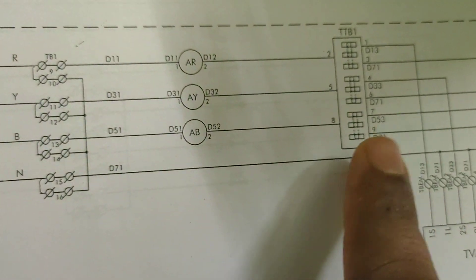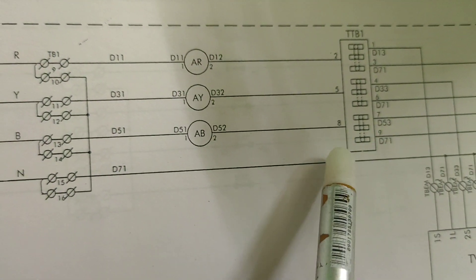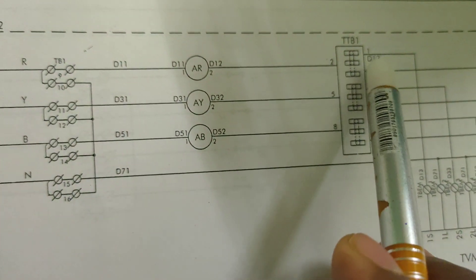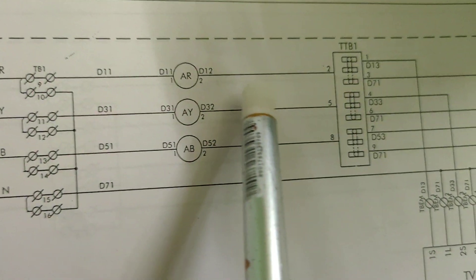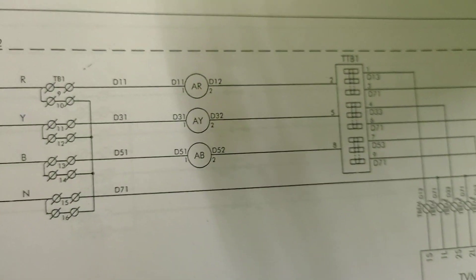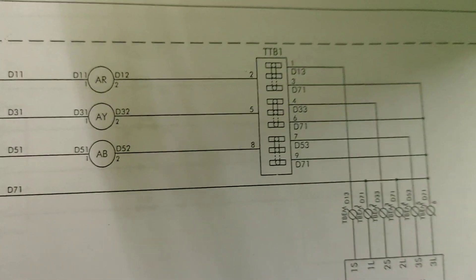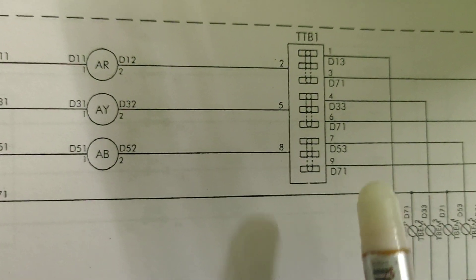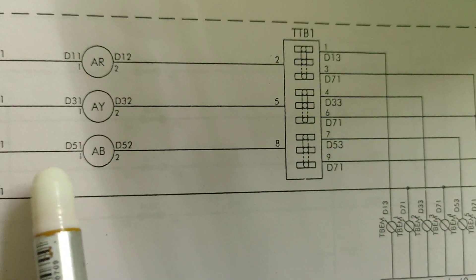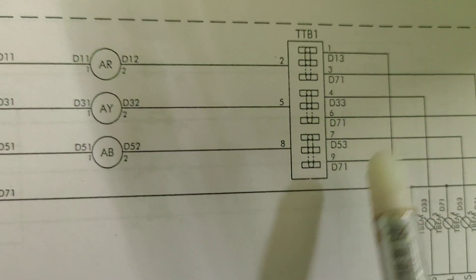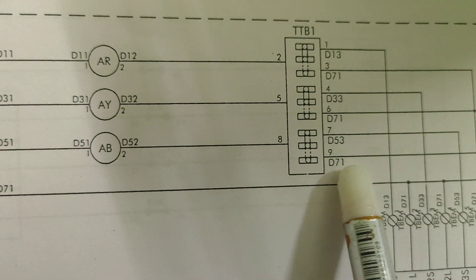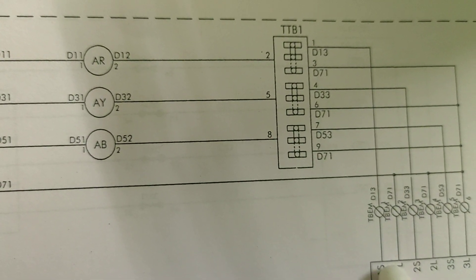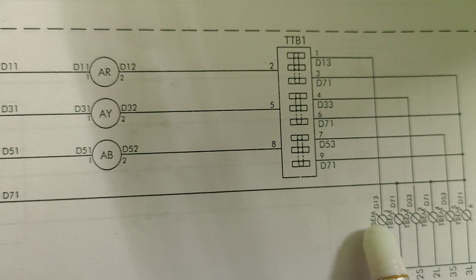After the test terminal block, the ferrule names change: D11 becomes D13, D31 becomes D33, D51 becomes D53, and D71 remains common. So from the TTB we get pairs: D71 with D13, D71 with D33, and D71 with D53.